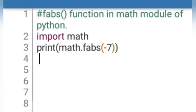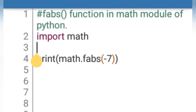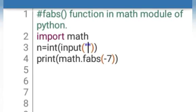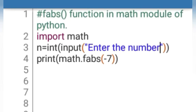So I write n equals int(input("Enter the number:")). Now see here, I have n as a variable which stores the value that the user inputs. This will print "Enter the number" and we use the fabs function with the variable n where the user's input is stored.